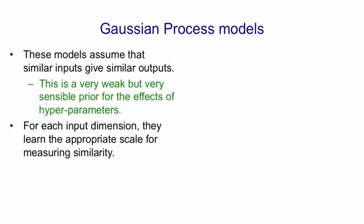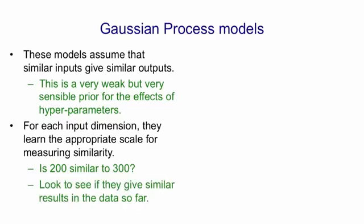Gaussian processes are able to learn, for each input dimension, what the appropriate scale is for measuring similarity. For example, if the number of hidden units could be 200 or 300, the question is: are those similar numbers or very different numbers? Should we expect the results with 200 to be very similar to results with 300, or very different? If we don't know anything about neural nets, initially we have no idea, but we can look at experimental results so far. If experiments with 200 and 300 tend to give very similar answers when accounting for other differences, then we set a scale for that dimension such that you need differences of much more than that to expect very different results.